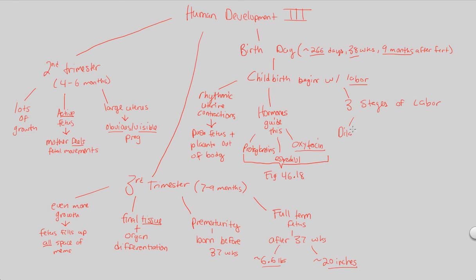First stage of labor is known as dilation. Dilation is going to be when the cervix, which was initially thickened with mucus, it actually thins. The cervix thins and it opens up. It opens itself up for the expulsion of the fetus. So that's our first step of labor. Then, after dilation, you have delivery.